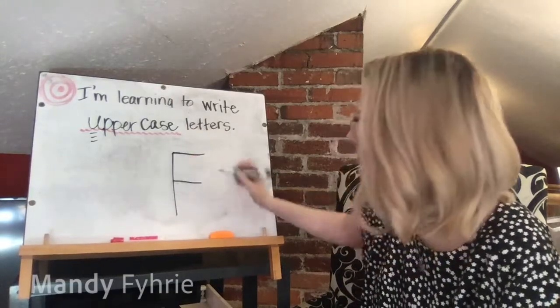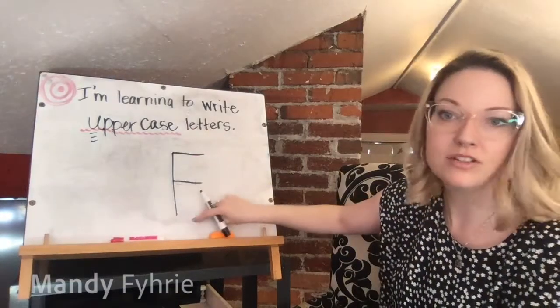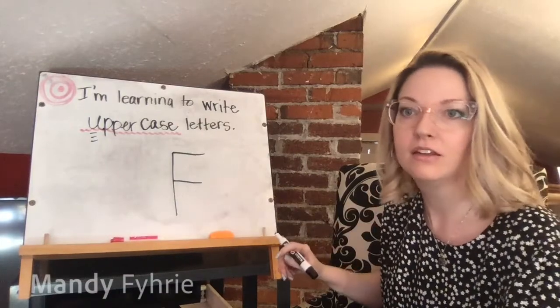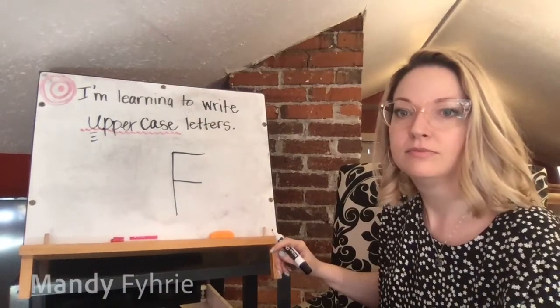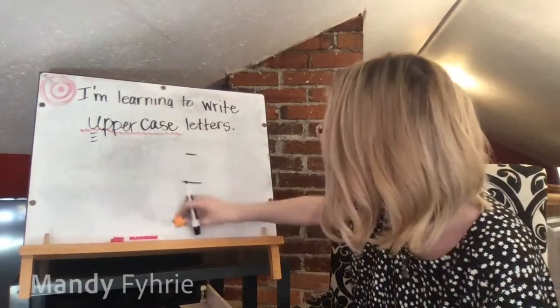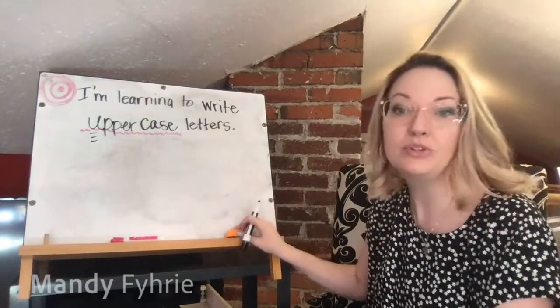Capital F: big line down, hop to the top, two lines across — one at the top and one in the middle, but not one on the bottom.